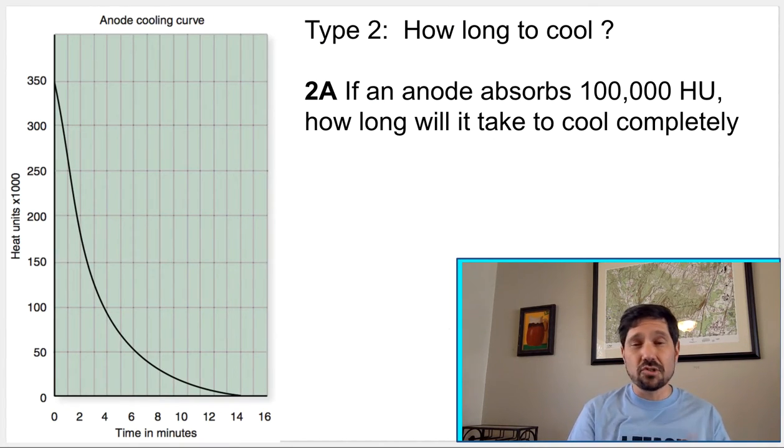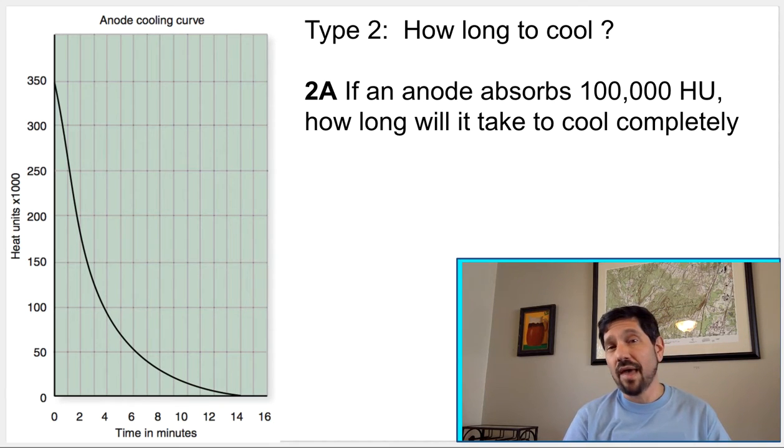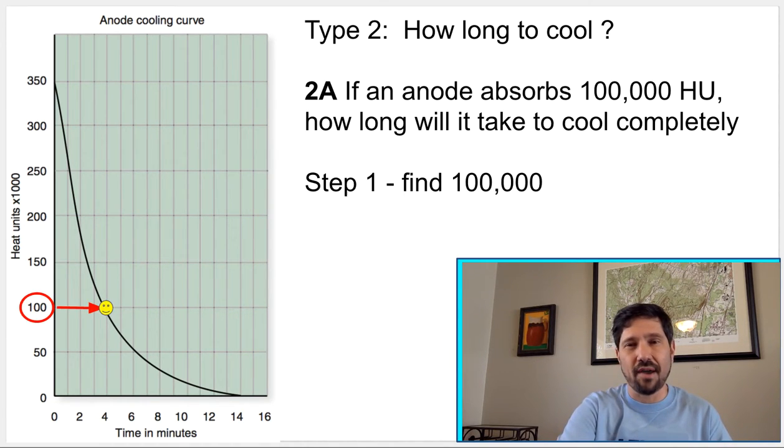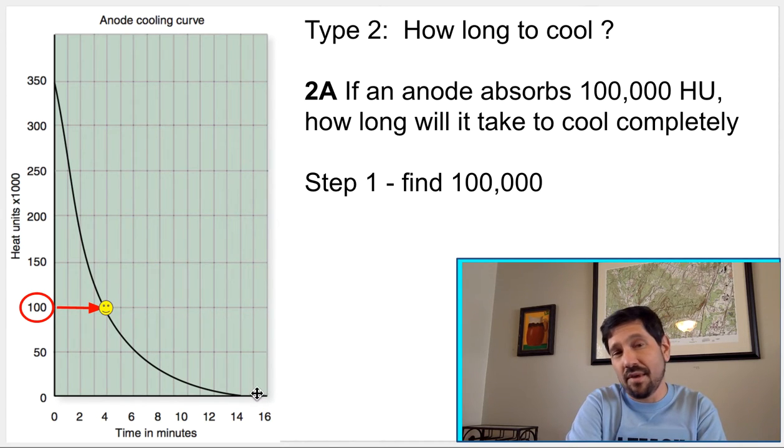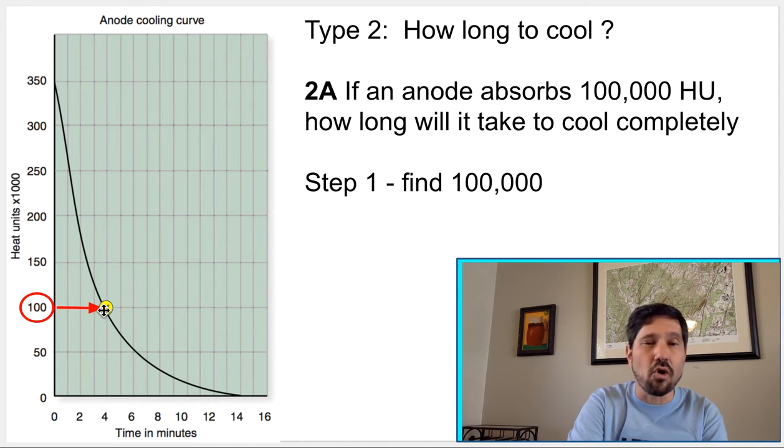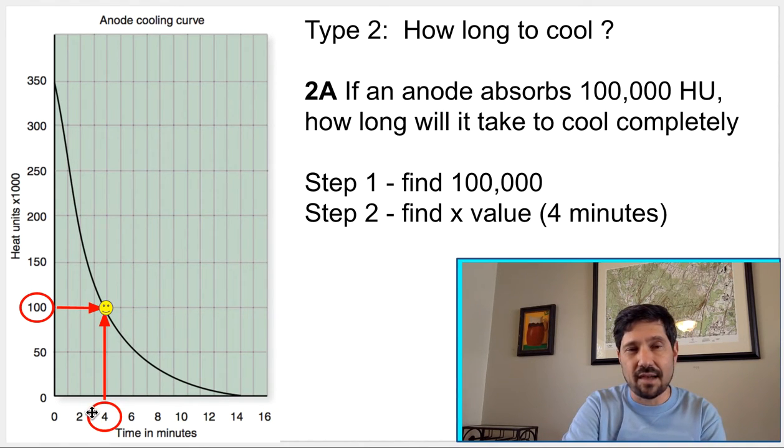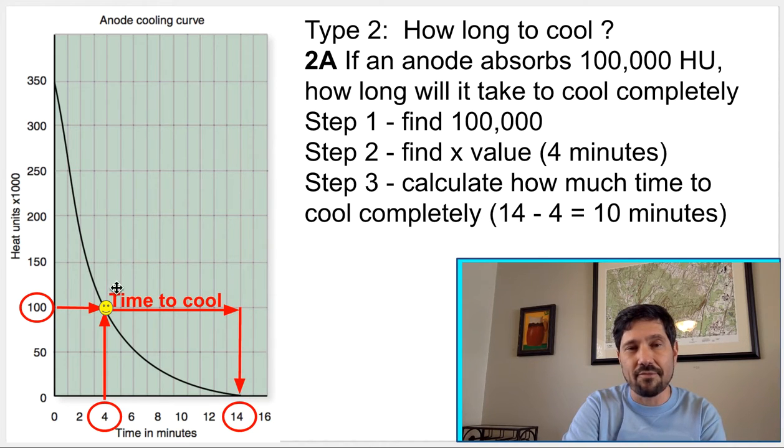Here's another type. So those are the ones that ask the maximum. They can ask you, hey, if an anode absorbs 100,000 heat units, how long will it take to cool completely? And so you would find that 100,000 heat units. If it's got 100,000 heat units on it, how long does it take to cool? It might have started here with 50,000 on it, and we did an exposure that drove it up. So we find the 100,000. We see that's like time four to cool completely would be to time 14. So 14 minutes minus four minutes is 10 minutes to cool completely from this point. Earlier, we were doing how long to cool completely from the maximum, but in this problem they said from this point, how long would it take to cool completely?